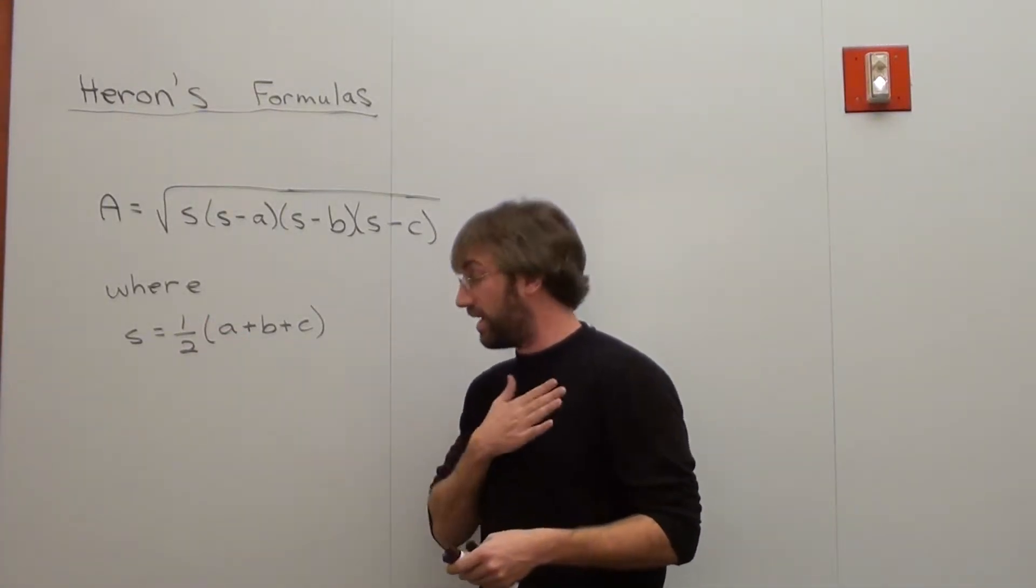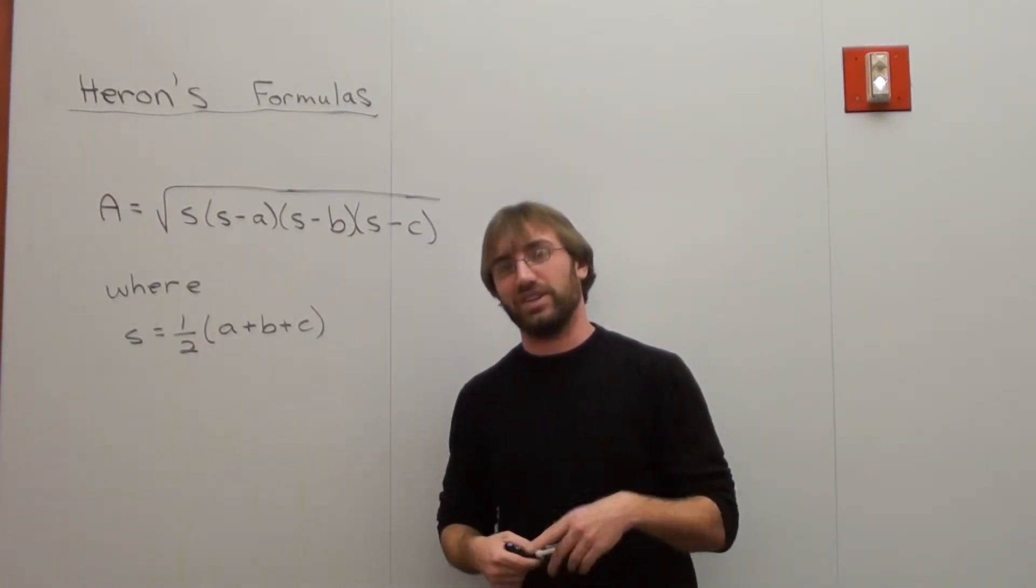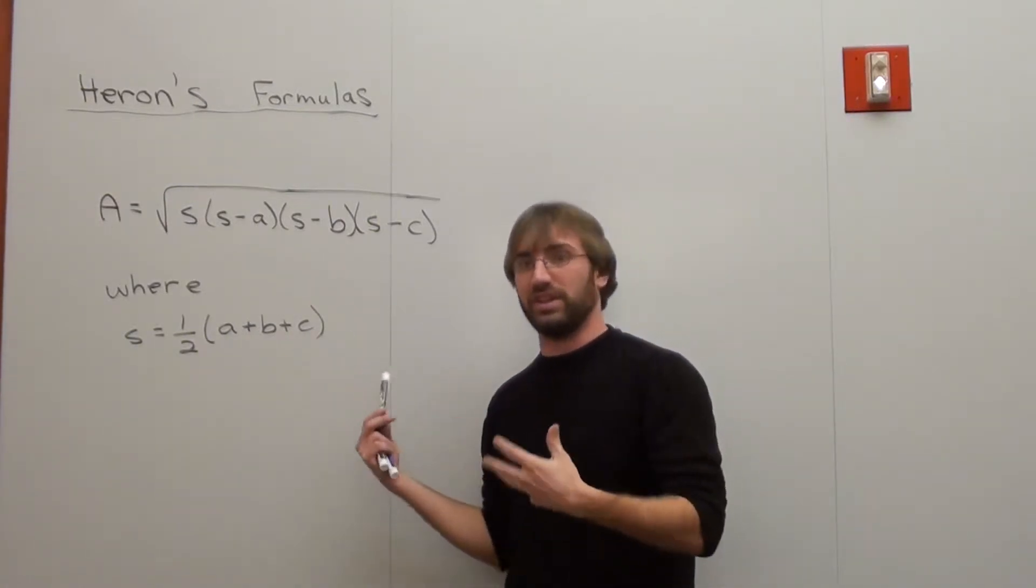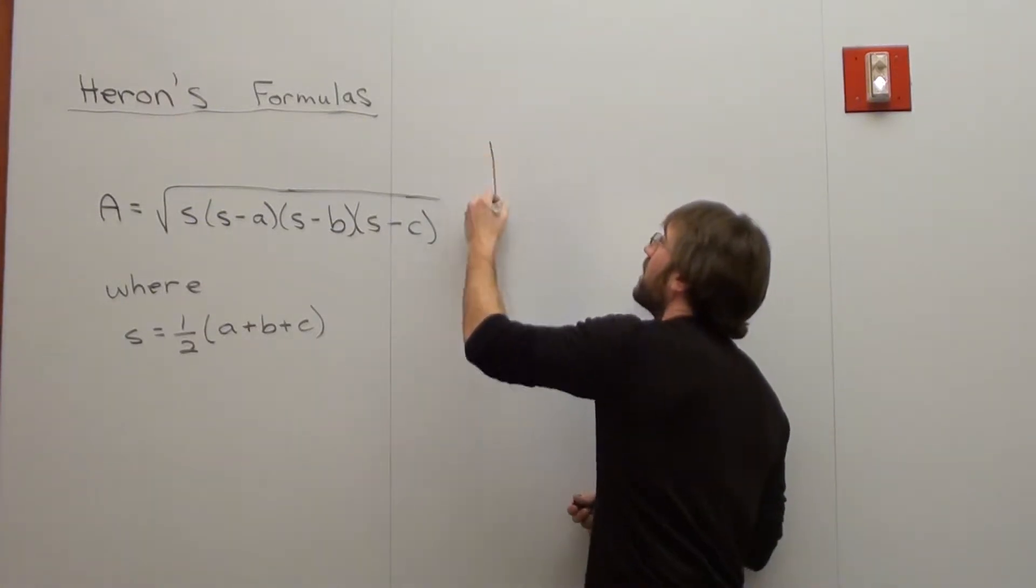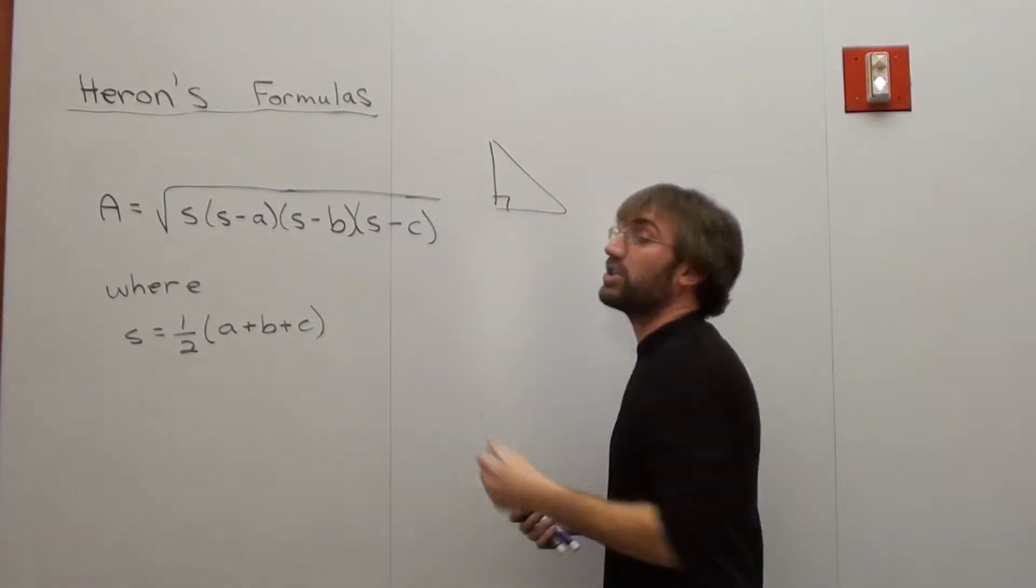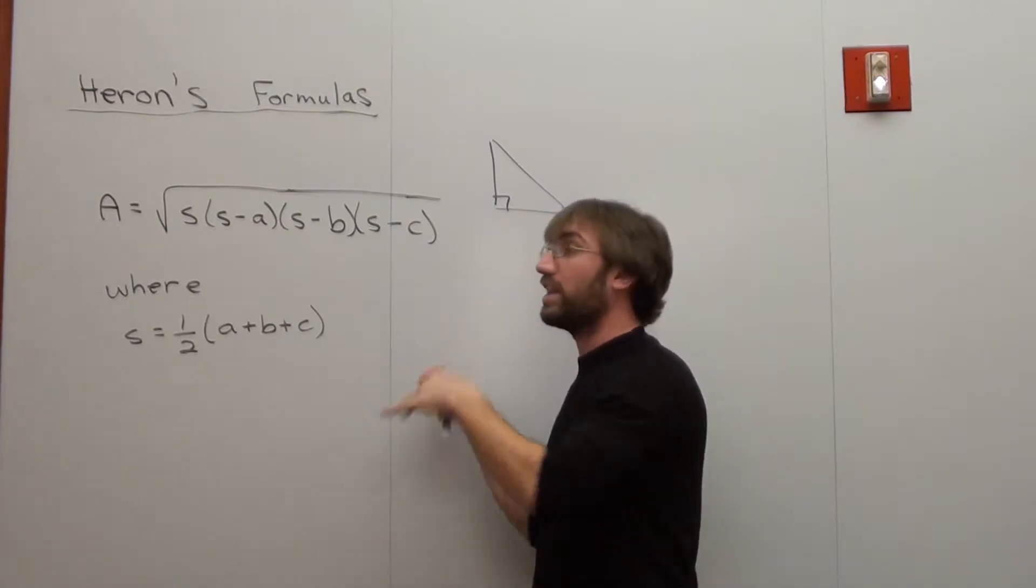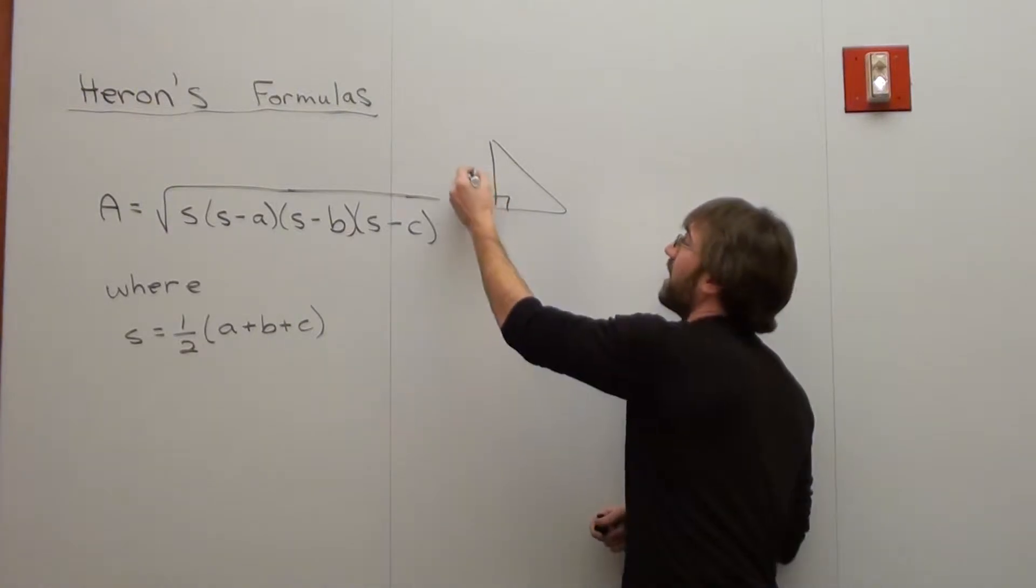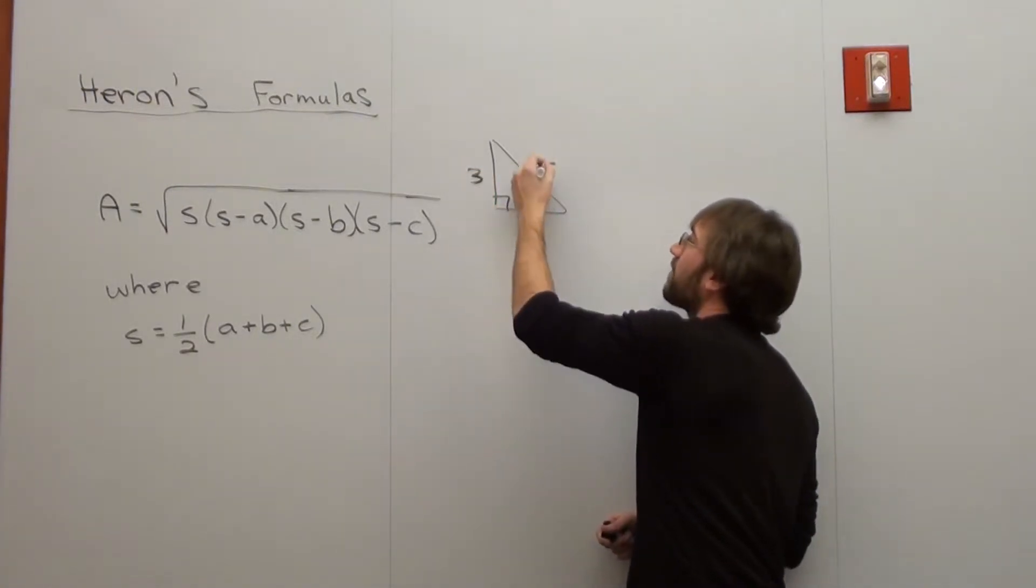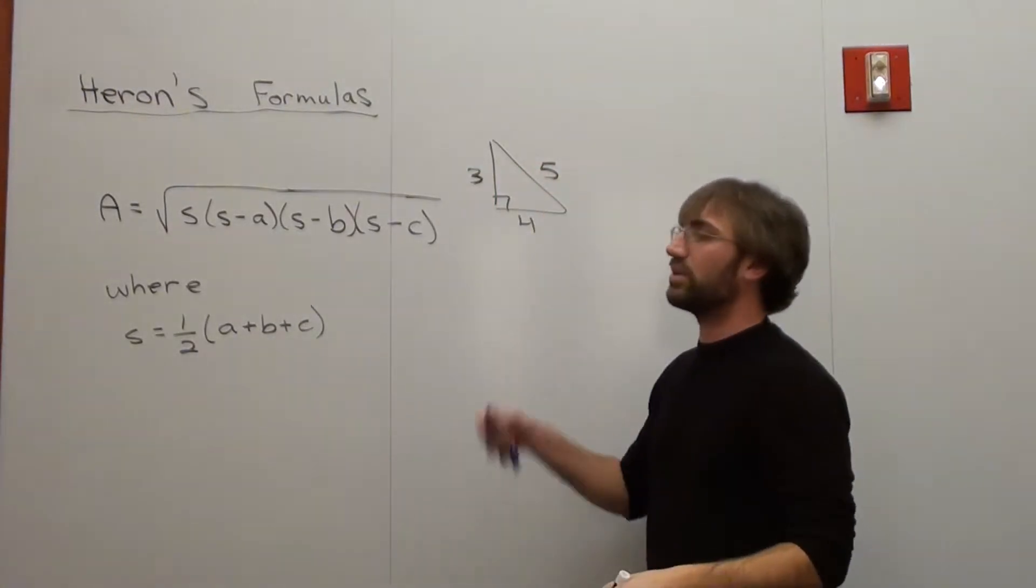So I want to figure out the area of a triangle that I actually already know, just to kind of prove that this works. I've got this triangle, and it doesn't have to be a right triangle. Heron's formula can work with any triangle where all the sides are given. I'm just doing this one because I know this one. This is a Pythagorean triple—a right-angle triangle.